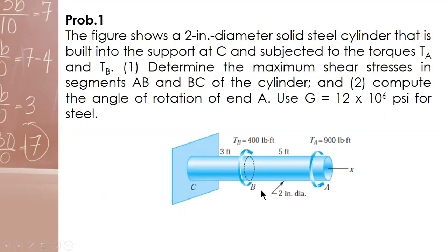So our first problem is determinate. If determinate, you can solve directly the unknowns. For this one, the figure shows a 2-inch diameter solid steel cylinder that is built into the support at C and subjected to the torques TA and TB. Determine the maximum shear stresses in segments AB and BC of the cylinder, and number 2, compute the angle of rotation of end A. Use G equal to 12 times 10^6 PSI for steel.